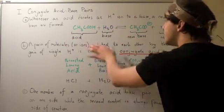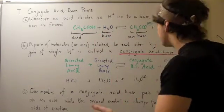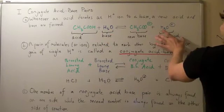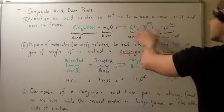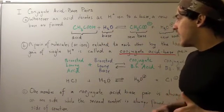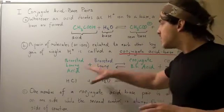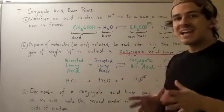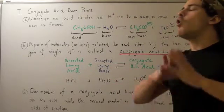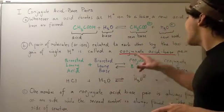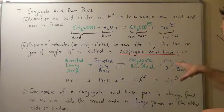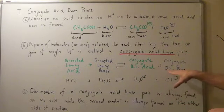Likewise, when a base gains an H-ion and becomes a new acid, that base and that new acid are also a conjugate acid-base pair. So whenever a Brønsted-Lowry acid reacts with a Brønsted-Lowry base, we will always form a conjugate Brønsted-Lowry acid and a conjugate Brønsted-Lowry base.